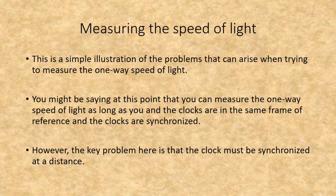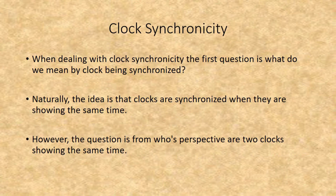You might say you can measure the one-way speed of light as long as you and the clocks are in the same frame of reference and the clocks are synchronized. However, the key problem is that the clocks must be synchronized at a distance. When dealing with clock synchronicity, the first question is: what do we mean by clocks being synchronized? Naturally, the idea is that clocks show the same time — but from whose perspective are they showing the same time?